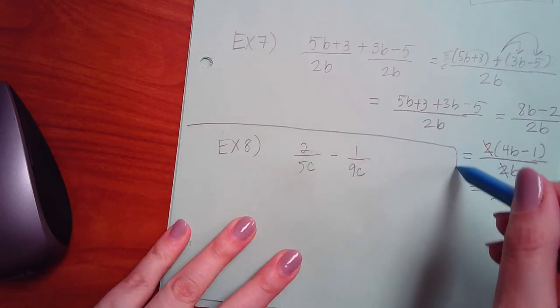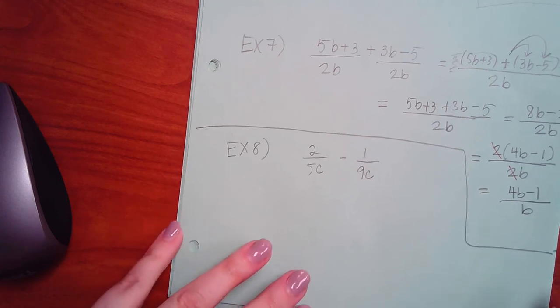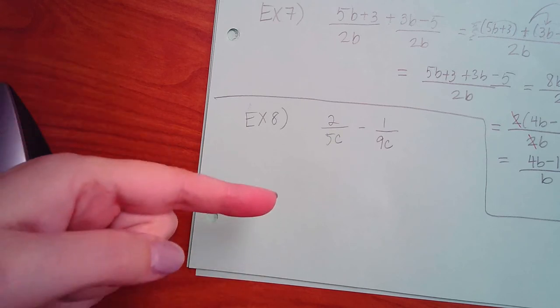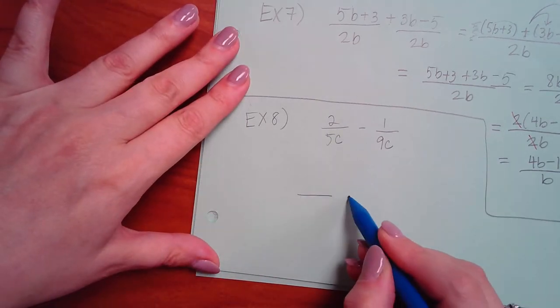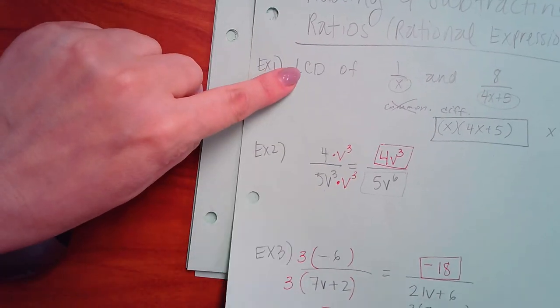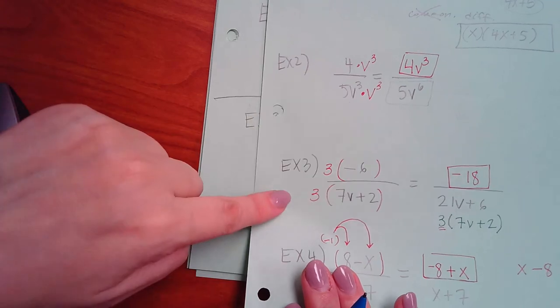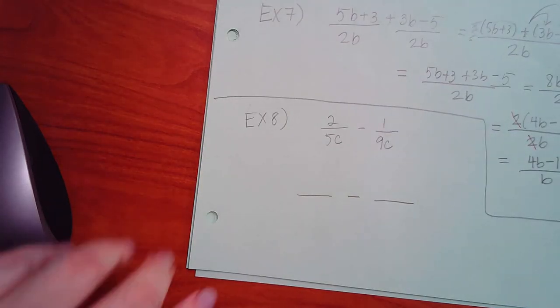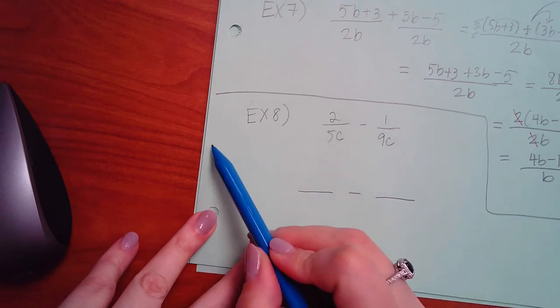So that's the ones that have like terms already. For the ones that don't have the common denominator, we have to use that idea, both of the two ideas together. We have to first find the common denominator and then we have to make both of the fractions have that common denominator. So here, what would the common denominator be?